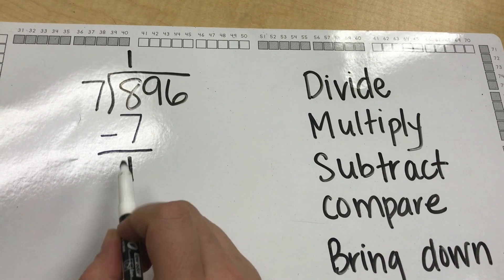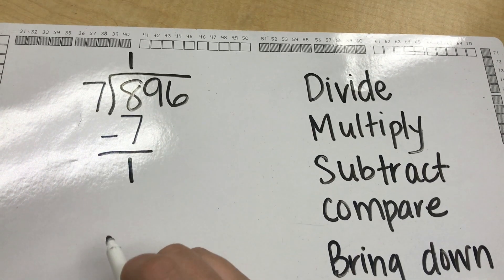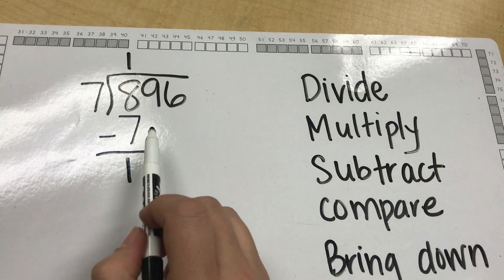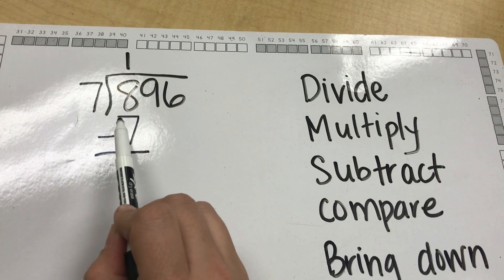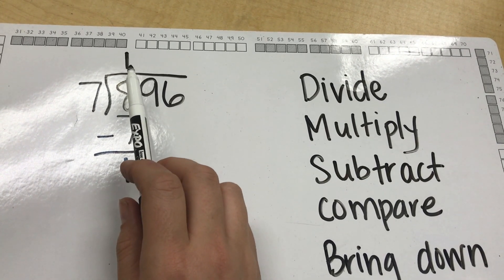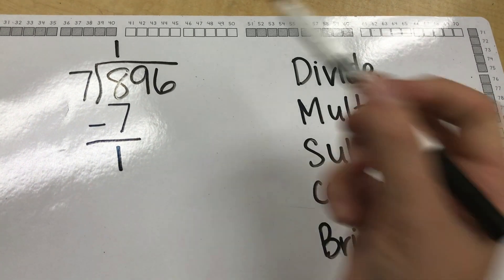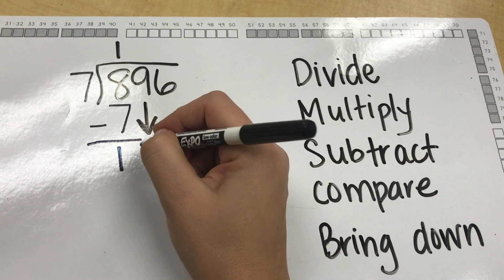Is my answer smaller than my divisor? If I can say yes then I know I'm ready to move on. If I can say no then I know that my answer here was too small and I actually need to go up a step in the multiplication tables. When I am done comparing I now bring down the next digit and work within the next place value.